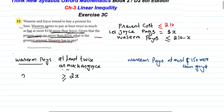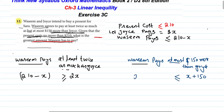Wasim's payment is 210 minus x, and this is greater than or equal to 2x — meaning what Wasim pays is at minimum 2x. Next statement: Wasim pays at most 150 more than Joy. Joy's amount is x, so x plus 150. At most means less than or equal to, so Wasim's payment 210 minus x is less than or equal to x plus 150.